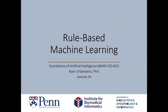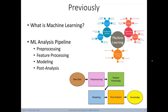Welcome to lecture 24 of Foundations of Artificial Intelligence. Today we're going to be learning about rule-based machine learning. In our last lecture we covered the basics of what machine learning is, and walked through an example of a machine learning analysis pipeline, including the phases of pre-processing, feature processing, modeling, and finally post-analysis.